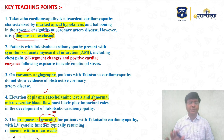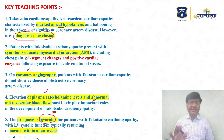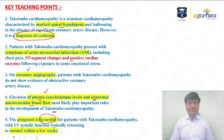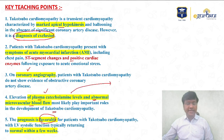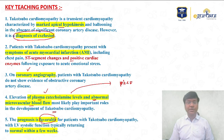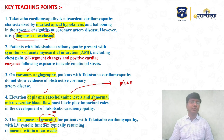Not all patients with ST segment elevation, positive biomarkers, and 2D echo hypokinesia necessarily have coronary artery disease. You must perform a coronary angiogram to rule it out. If the angiogram is normal and plasma catecholamine levels are elevated, this is suggestive of Takotsubo cardiomyopathy. Additionally, you should also rule out pheochromocytoma — a tumor of the adrenal medulla — which also causes massive catecholamine release.